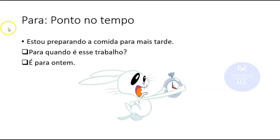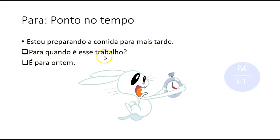Another usage of PARA is to indicate a point in time. For example, 'estou preparando a comida para mais tarde' — I am cooking for later. 'Para quando é esse trabalho?' — When is this job due? 'É para ontem. Corra! Pressa, pressa, pressa.' — It was due yesterday, hurry up!